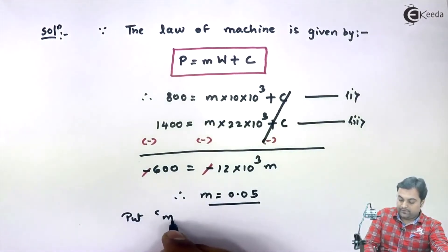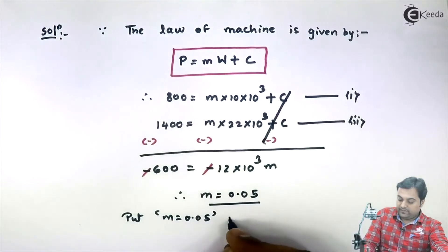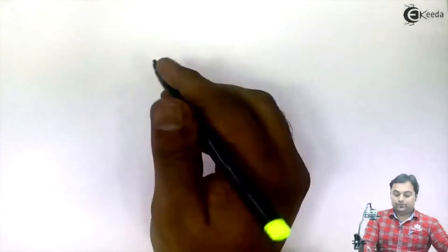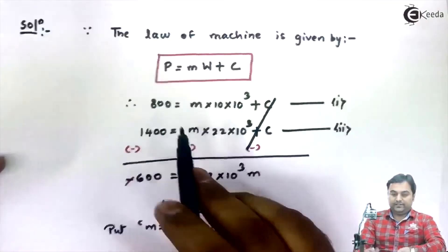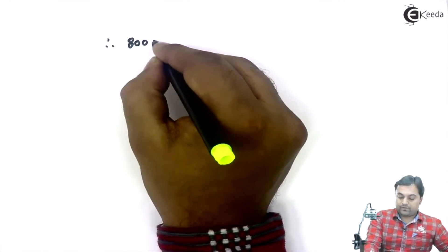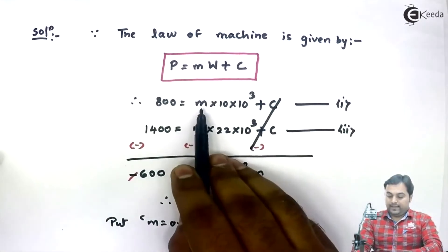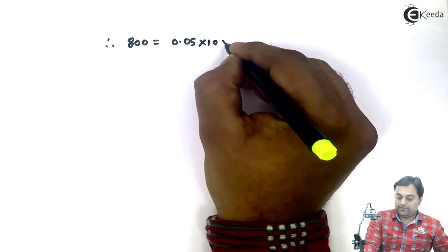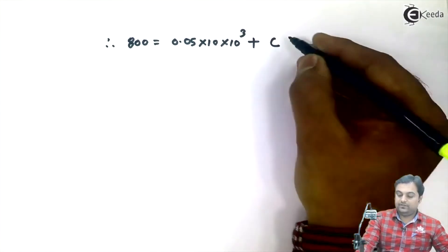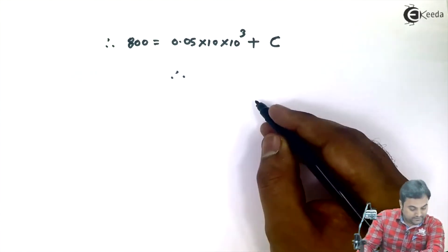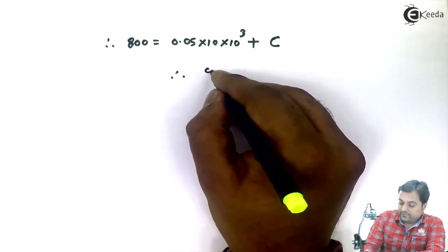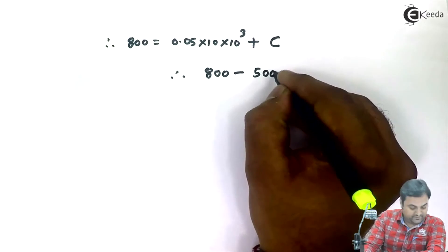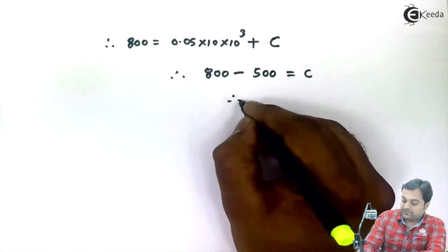After getting M = 0.05, I substitute it into equation number 1: 800 = 0.05 into 10 into 10 raised to 3 plus C. That term becomes 500, so C = 800 minus 500, which gives C = 300.